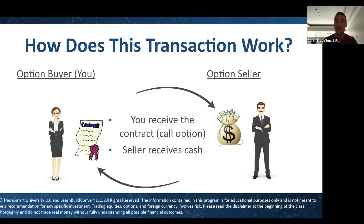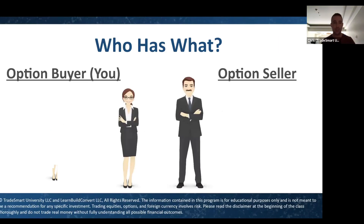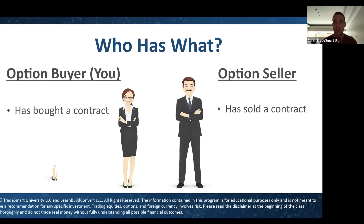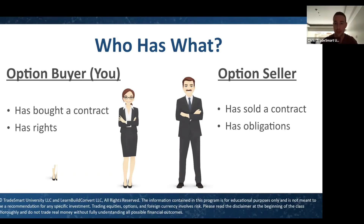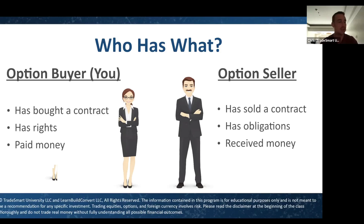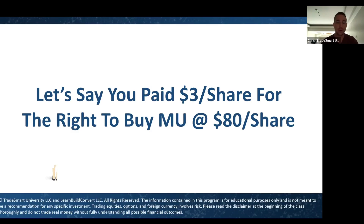The important thing is: the seller receives cash for their contract, and the buyer receives the contract. The buyer has rights; the seller has obligations. If Anna decided she wanted to buy the house, the seller is obligated to sell it to her for $400,000 whether he wants to or not — it's a legally binding contract. In our Micron example, Anna paid $2,000 for that right; Josh received that $2,000 in exchange for making promises on the asset.